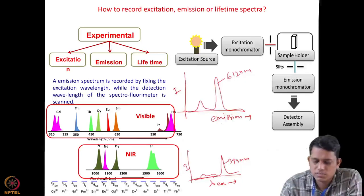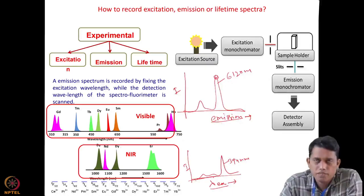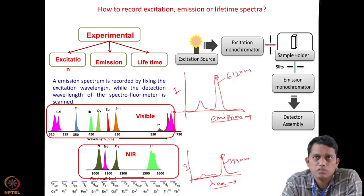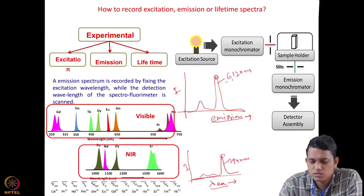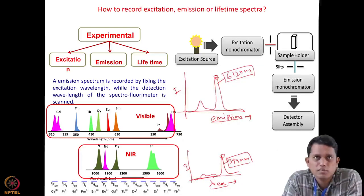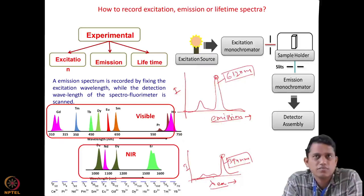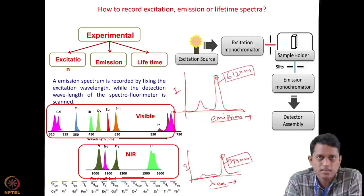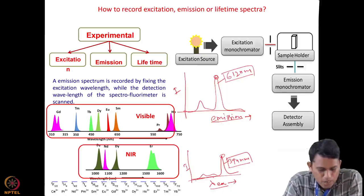So now I have the excitation spectra and emission spectra. I choose the peak maximum from the emission spectra and the peak maximum from the excitation spectra — for europium that is a peak at 394 nm in excitation. These two positions are used to record lifetime data. In the lifetime measurement, the excitation source is fixed at 394 nm and the emission line is fixed at 612 nm, and with both fixed, we record the lifetime spectroscopy. These are the three kinds of spectra: excitation spectra, emission spectra, and lifetime spectra.